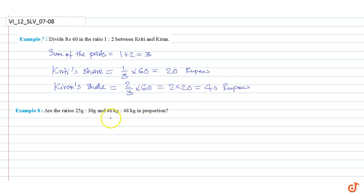These are our answers. Example 8: Are the ratios 25 gram is to 30 gram and 40 kg is to 48 kg in proportion? We can say that 25 gram is to 30 gram